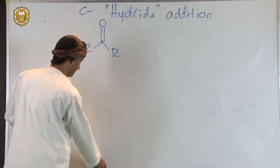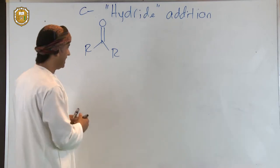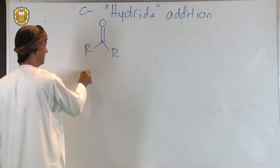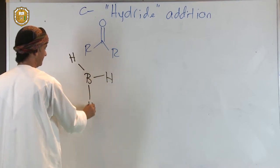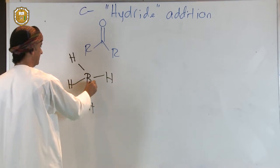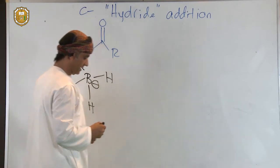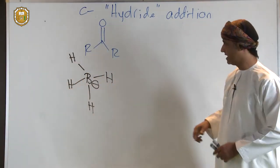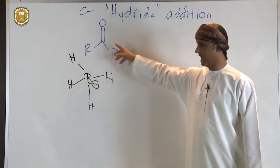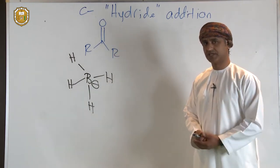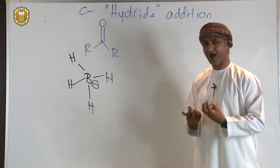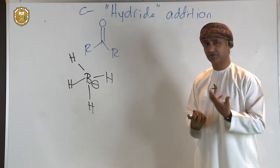So we have the borohydride ion. This is the borohydride ion, BH4-. What's going to happen next is that the hydride ion will attack the carbonyl compound, the ketone in this case, but it's not quite hydride. It's actually hydrogen transfer.